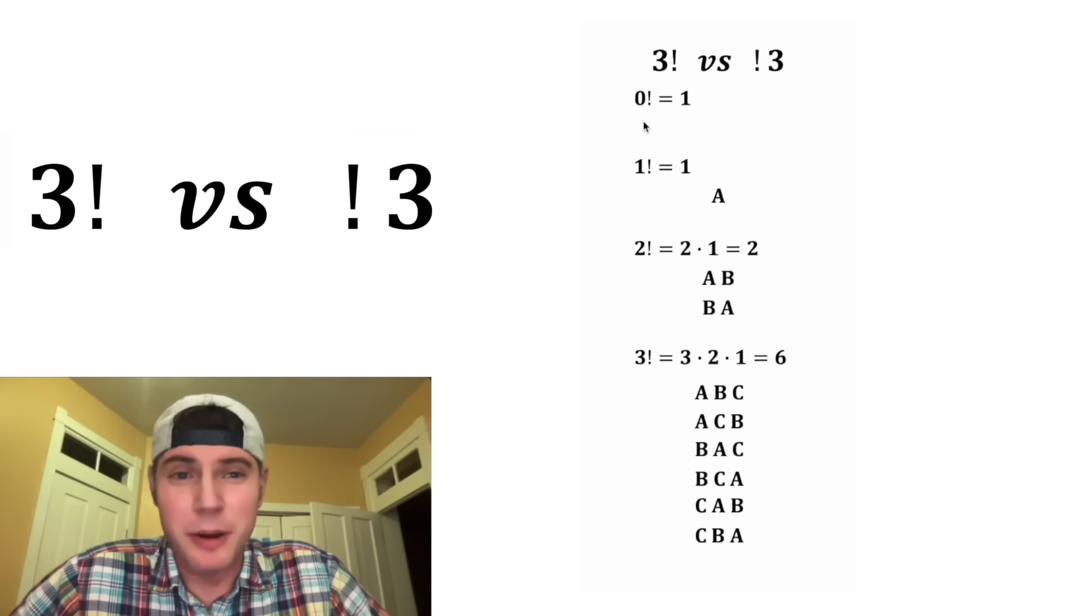And now's a good time to talk about 0 factorial. If we have 0 objects, how many ways can we arrange these 0 objects? Well, there's 1 way to do it. That right there. And that's why 0 factorial is equal to 1. There's only 1 way to arrange no objects.